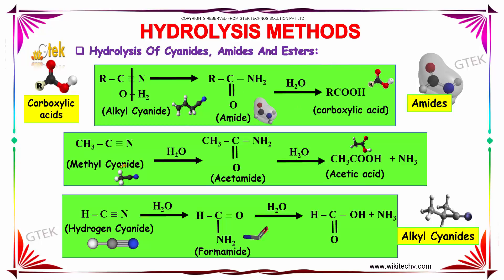When methyl cyanide is taken and hydrolyzed, it first produces acetamide. On further hydrolysis, it produces acetic acid with ammonia. When hydrogen cyanide is taken and hydrolyzed, it produces formamide. When it is further hydrolyzed, it produces a carboxylic acid along with ammonia as the byproduct.